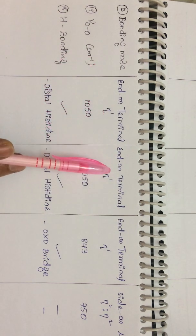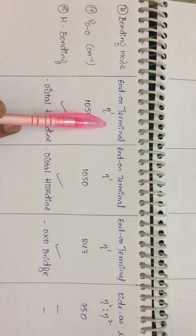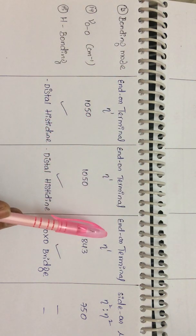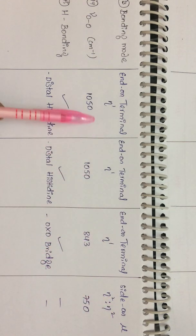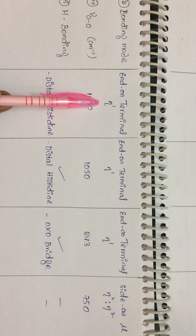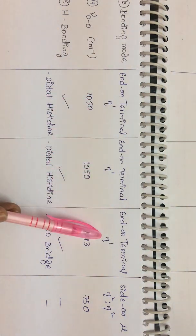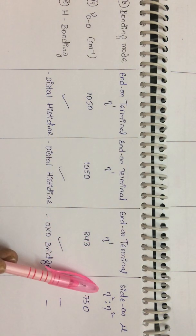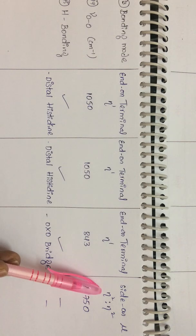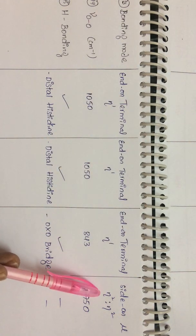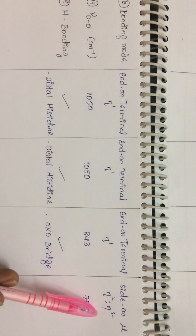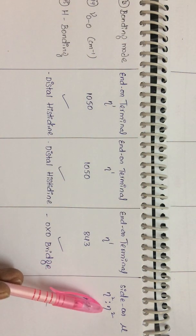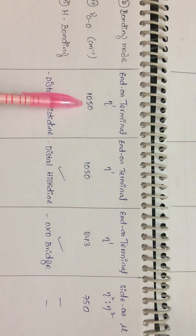Regarding bonding modes: end-on terminal bonding is most commonly found, and it is present in hemoglobin, myoglobin, and hemerythrin. In hemocyanin, the bonding mode is side-on bridging. In terms of hapticity, hemoglobin, myoglobin, and hemerythrin show η¹ (monohapto) bonding for dioxygen, whereas in hemocyanin it is η²:η² (dihapto-dihapto) since one oxygen of the peroxo form is bound to both metal atoms and both oxygens are simultaneously bound to both metals.